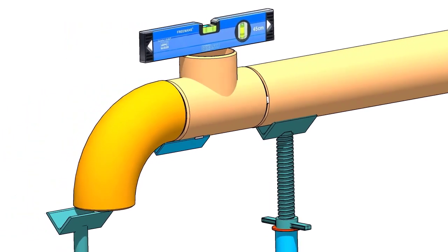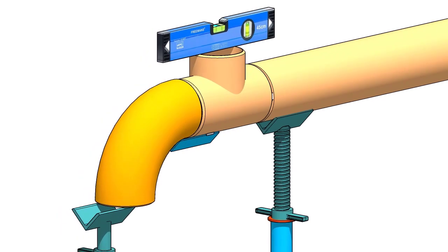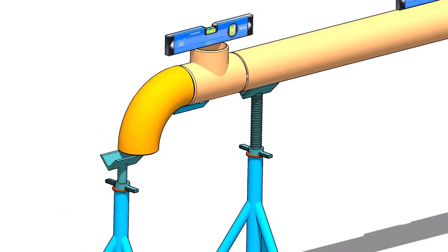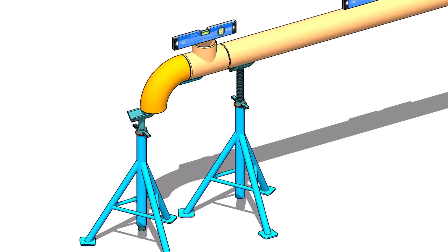Put the elbow on the angle cleat. Provide proper support at the lower face of the elbow, or else it will fall down. Put the gap rod between the joint.